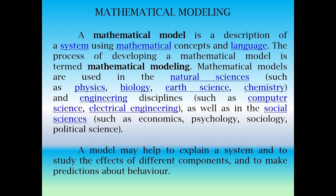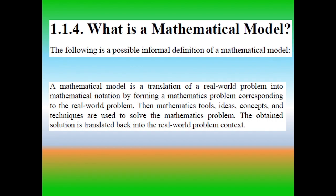Mathematical modeling includes natural sciences such as physics, biology, earth science, and chemistry, as well as engineering disciplines such as computer science and electrical engineering. It also applies to the social sciences, including economics, psychology, sociology, and political science. A model may help to explain a system, study the effects of different components, and make predictions about behavior. That's why we use biomathematical concepts to predict many things we need in our real life.